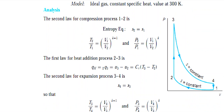Looking at the P-V diagram of the Otto cycle, at each and every point we need to find the pressure and temperature. From 1 to 2 we have adiabatic compression; from 2 to 3 we have constant volume heat addition; from 3 to 4 we have adiabatic expansion; and from 4 to 1 we have constant volume heat rejection.